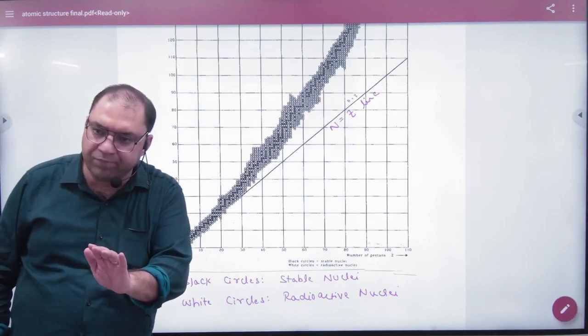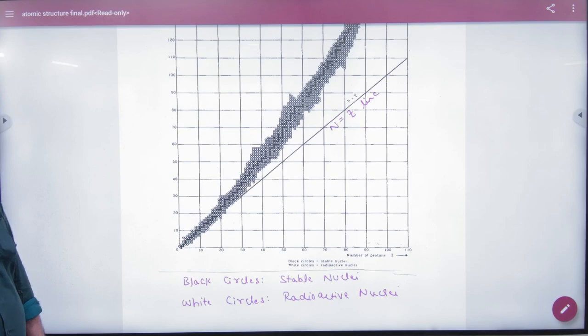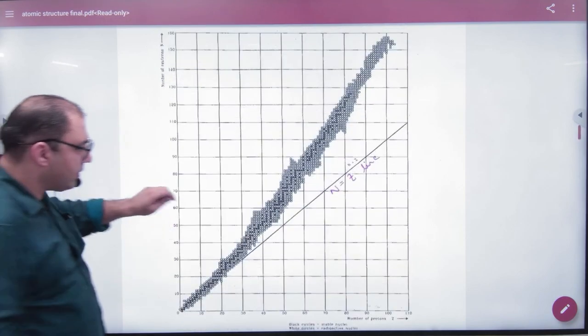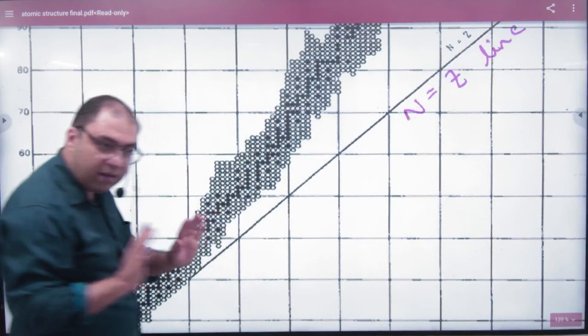But the elements are stable. In stable elements, N and Z—these circles are black, dark—these are stable nuclei.